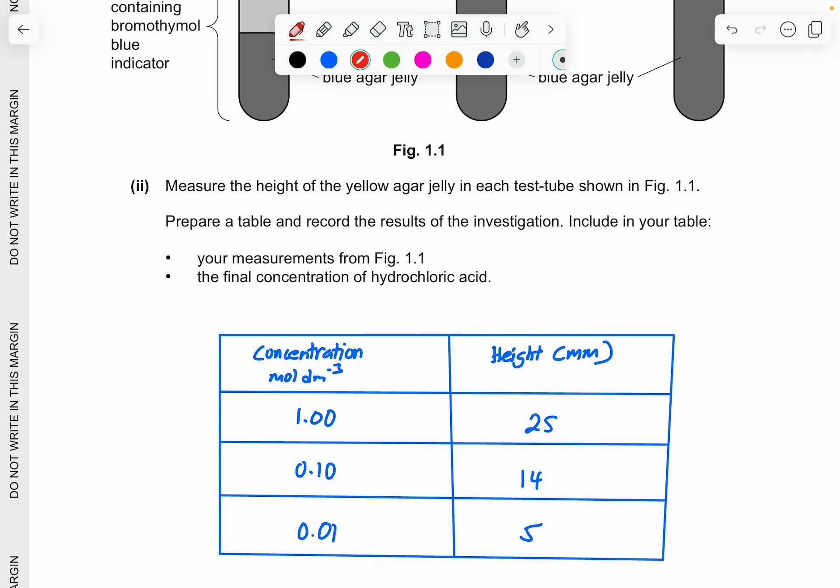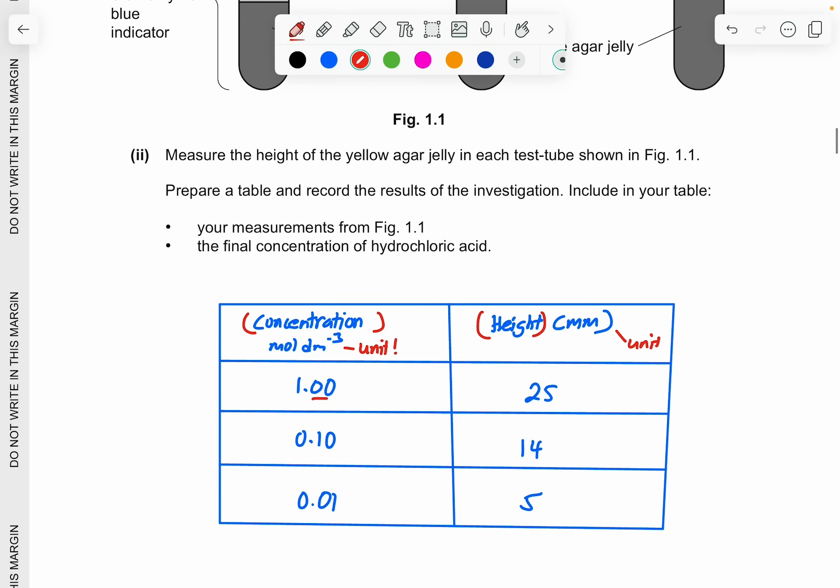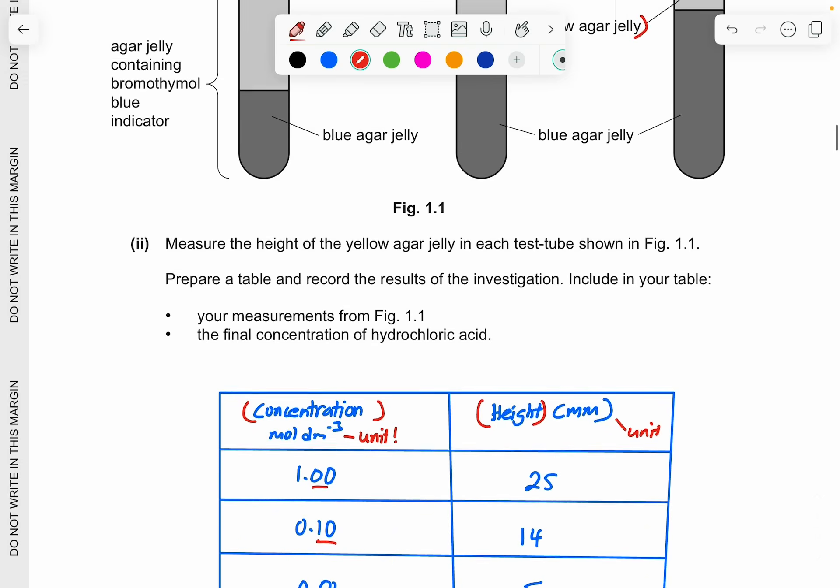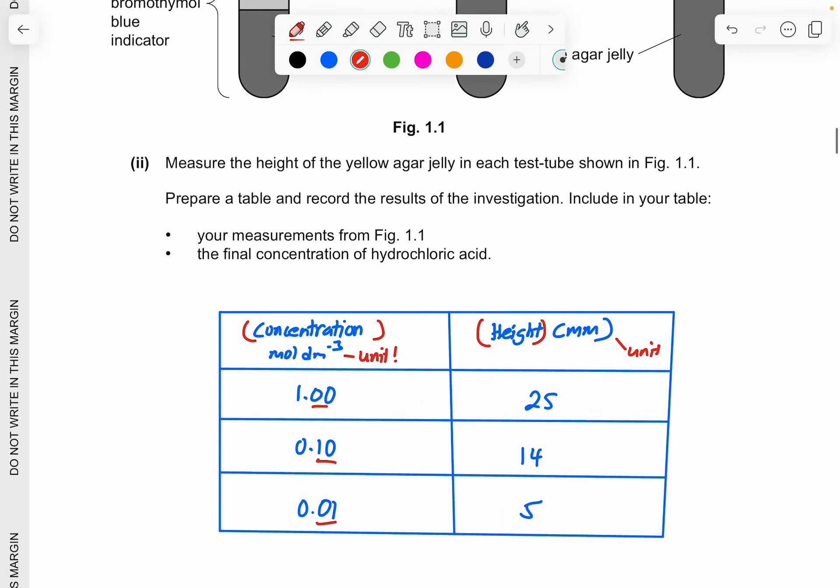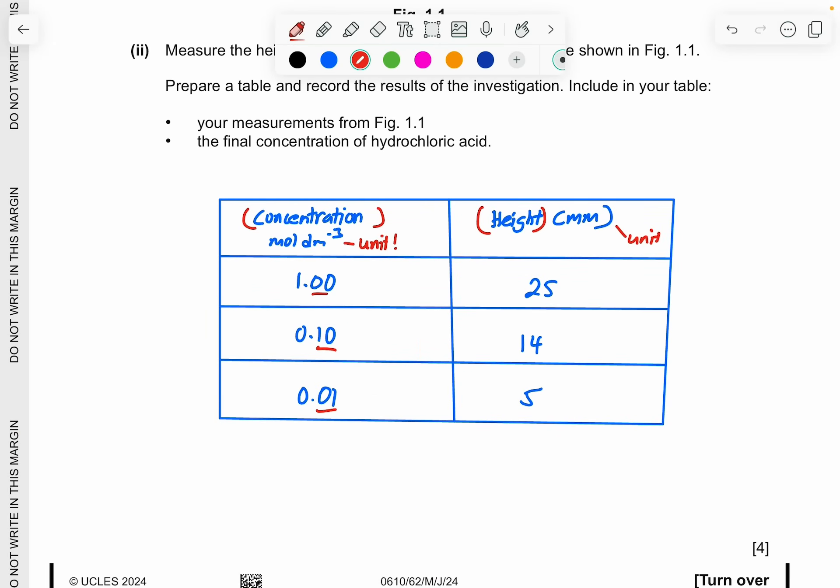So they are pointing at this. So they've asked you to measure using a ruler, of course. So prepare a table and record your results of the investigation. Include in your table your measurements from figure 1.1. The final concentration of HCl. So you must have your concentration. Your units is very important. You must have this. The height and also the unit. So you can add your values in. Make sure the decimal points are constant for each of it. Don't have 1 and 0.10. All of a sudden, let's have 1.00, 0.10. And that will be a better flow of it.